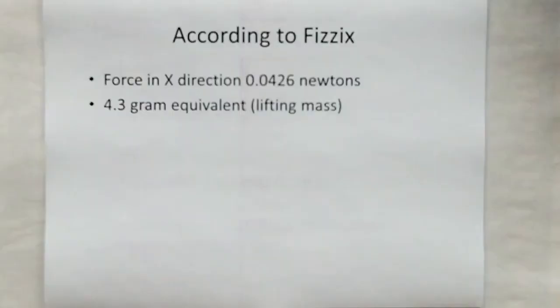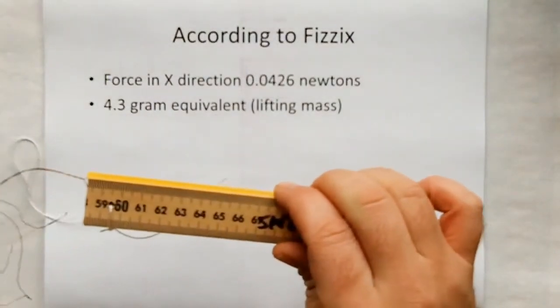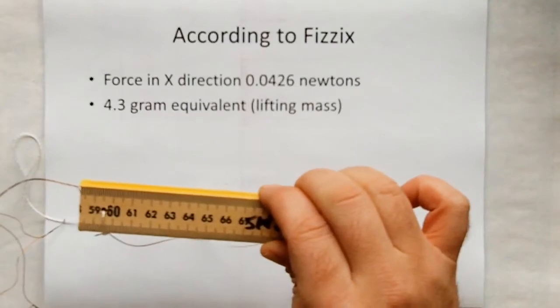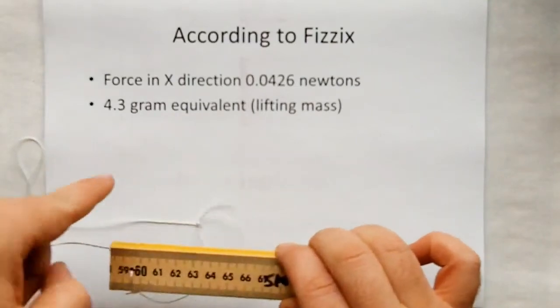The software comes up with 43 millinewtons, which is effectively 4.3 gram equivalent. What that means is, if I took the string off the back of this, ran it over the end of the table, how much mass could it lift? That would be dangling from a mass over a pulley off the end of a table.